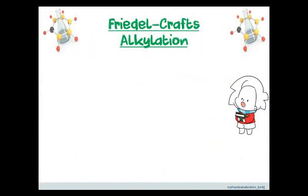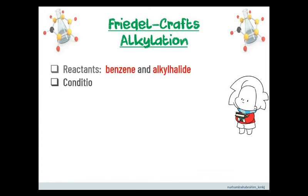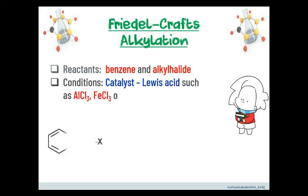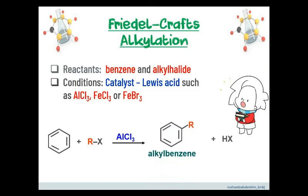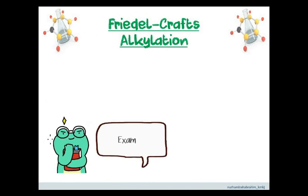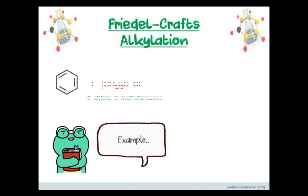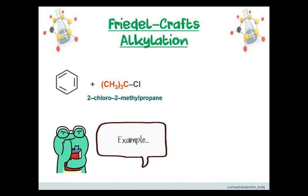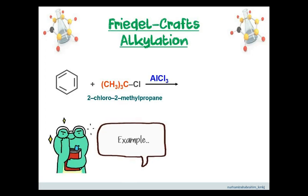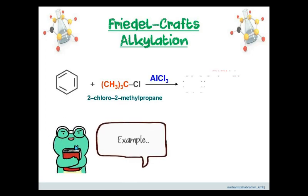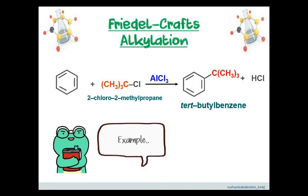The next reaction is Friedel-Crafts alkylation. The reactant must contain an alkyl halide in the presence of a Lewis acid as catalyst. This reaction is useful when adding an alkyl group into the benzene ring to produce an alkylbenzene. For example, benzene reacts with 2-chloro-2-methylpropane in the presence of AlCl3, to produce tert-butylbenzene, with hydrochloric acid as a by-product.